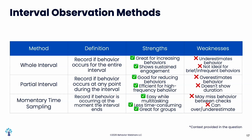Here's a chart that breaks it all down. Whole interval: recorded if behavior occurs for the entire interval — great for increasing behavior and showing sustained engagement, underestimates behavior, not ideal for brief or infrequent behaviors. Partial interval: recorded if behavior occurs at any point during the interval — good for reducing behaviors, efficient for high frequency behaviors, does not show duration. Momentary time sampling: record if the behavior occurs at a specific moment at the end of the interval — easy while multitasking, less time consuming, great for groups, but may miss behavior between checks and can over- or underestimate behavior.